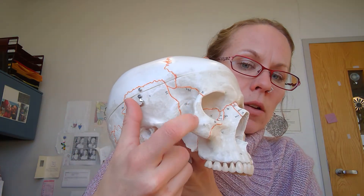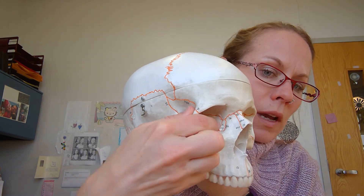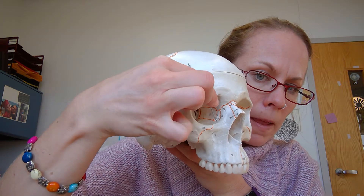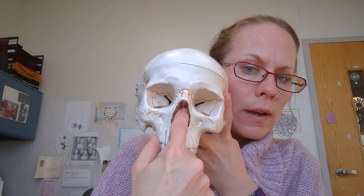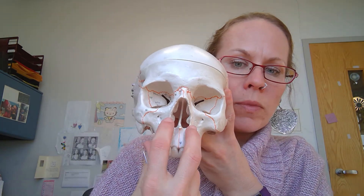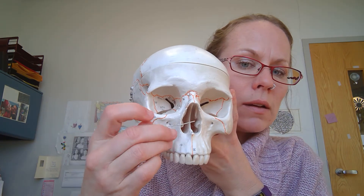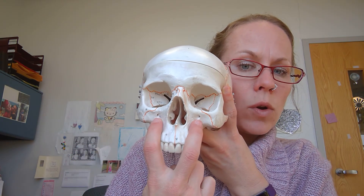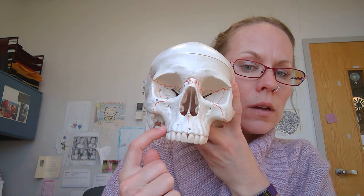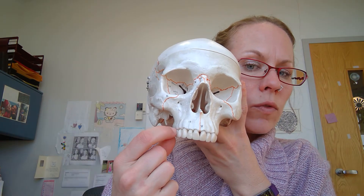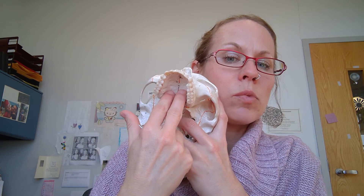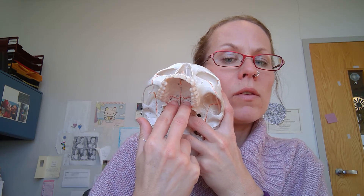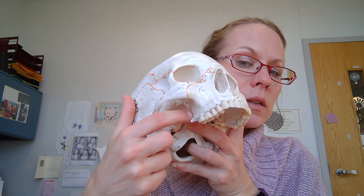So to recap: we have the zygomatic bone with the temporal process, the lacrimal bone with the nasolacrimal canal, the nasal bone, the single vomer, left and right inferior nasal conchae, left and right maxillary bones with the infraorbital foramen and the alveolar portion forming tooth sockets, the palatine process of the maxillary bones, and left and right palatine bones forming the back of the roof of the mouth and extending upward.